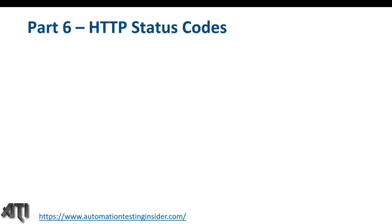Hello everyone, welcome back to another video on automation testing setup. This is the sixth part of the API testing series. Today we are going to talk about different types of HTTP status codes. This is also an important interview question — the interviewer might ask what a particular status code means, or what the different categorizations of HTTP status codes are.